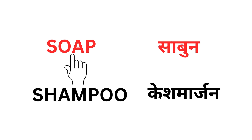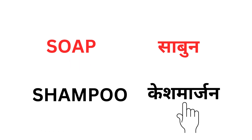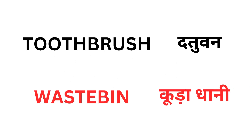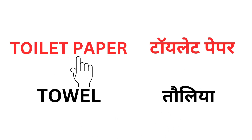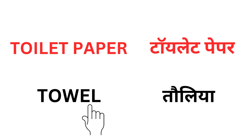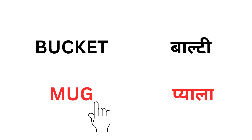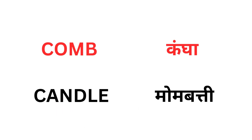Soap — Sabun. Shampoo — Kesh Marjan. Toothbrush — Datuwan. Wastebin — Kudadhani. Toilet Paper — Toilet Paper. Towel — Tolia. Bucket — Balti. Mug — Piyala. Comb — Kangha.